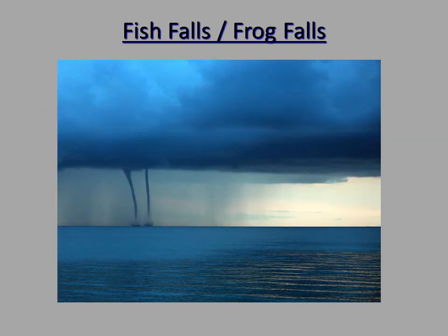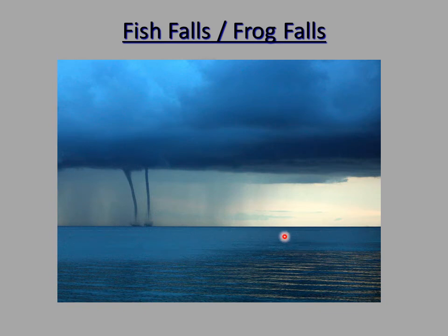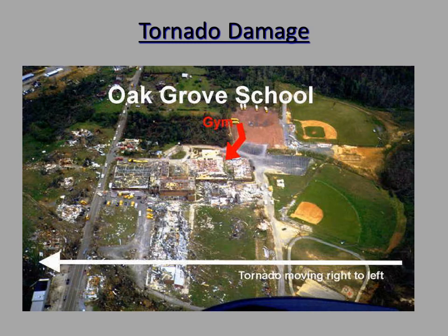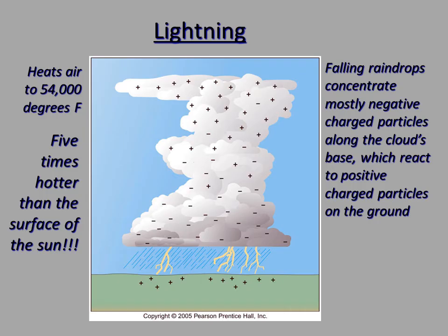Fish falls and frog falls — here's a beautiful twin tornado over water. Sometimes tornadoes can suck up fish or frogs, keep them aloft in the storm, and then dump them on land, sometimes hundreds of miles away from the ocean, which obviously freaks out the people where it lands. Here's some more tornado damage — an F3 that destroyed a school. You always have to remember the downside of tornadoes.